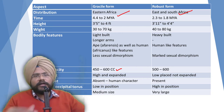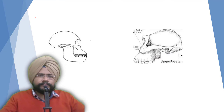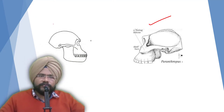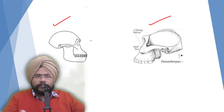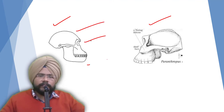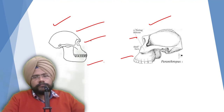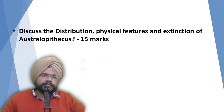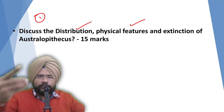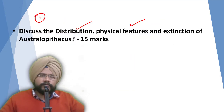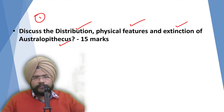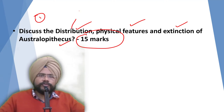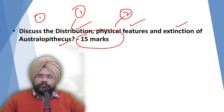You had to differentiate each feature this way, then draw diagrams. The second part asked to discuss the distribution, physical features, and extinction of Australopithecus kinds — 15 marks. You had to discuss: first, distribution; second, physical features; third, extinction of Australopithecus variants.